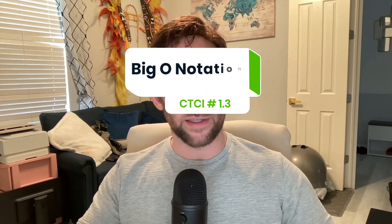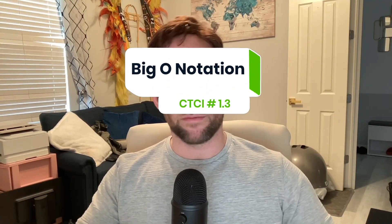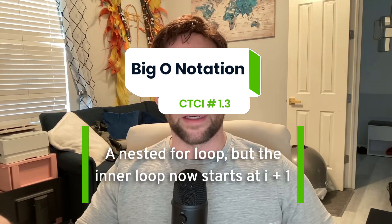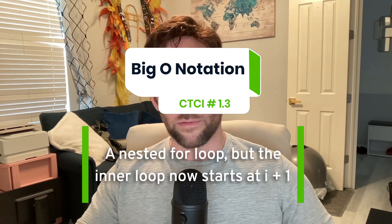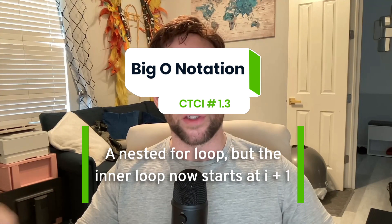Okay, welcome back to another video, and today we're going to be going over an example for big O notation in the CTCI book. And this time, this is a little tricky. It's a nested for loop, however, the inner for loop says int j equals i plus 1. Let's get into it.